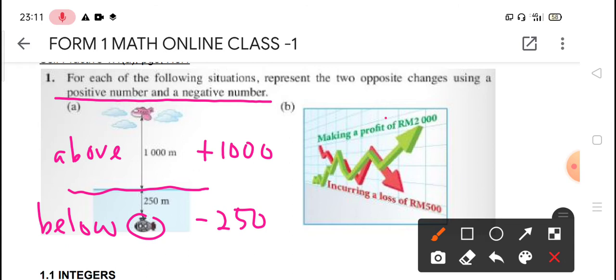Now we move on, question B. Make a profit. Profit means you gain more money, so this one should be positive 2000. And the next situation will be loss. Loss is opposite compared with profit, so it will be negative 500. So this is the solution and answer for question one.